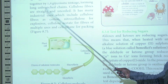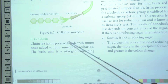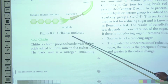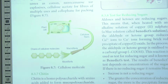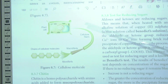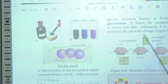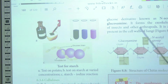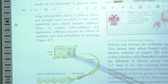Chitin is another important example of a structural homopolysaccharide. It forms the cell wall of various fungi and the exoskeleton of insects and arthropods. Chitin is mainly made up of repeated units of N-acetylglucosamine.